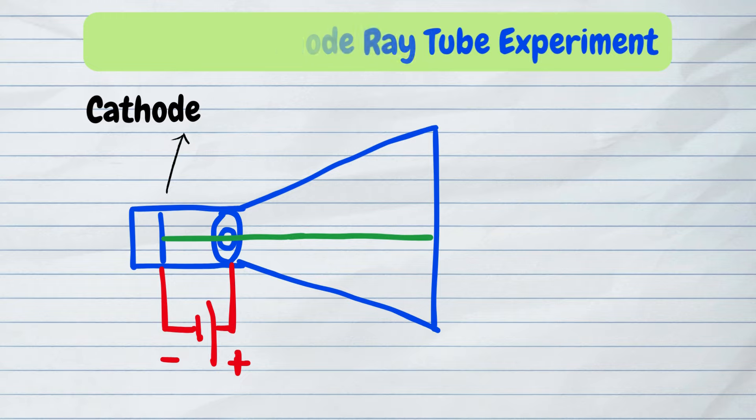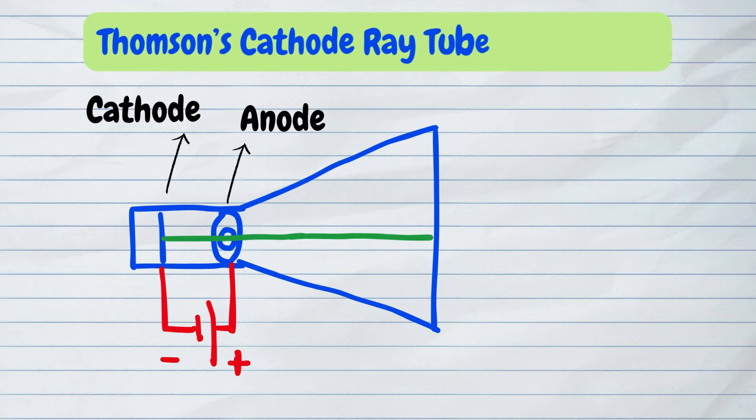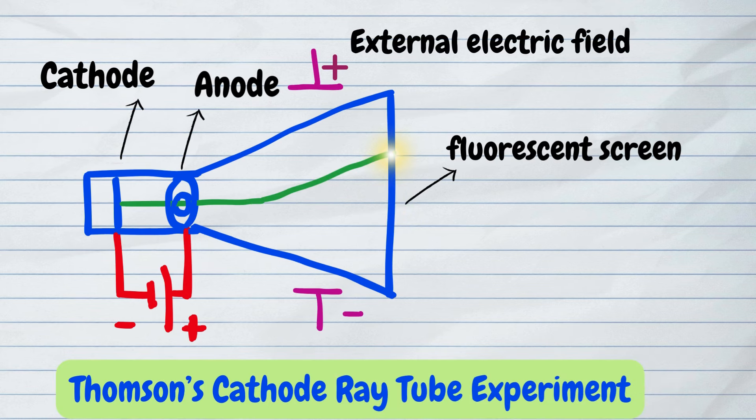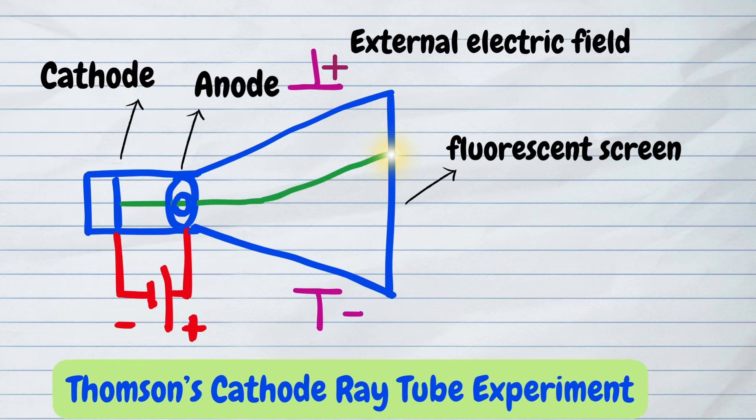This ray travels from the cathode to the anode, which is the positively charged plate, then it goes through an aperture in the anode and eventually hits a fluorescent screen on the other end of the tube and produces a bright light. When an external electric field is applied across the tube, the rays are attracted towards the positive plate, indicating that the ray consists of negatively charged particles.